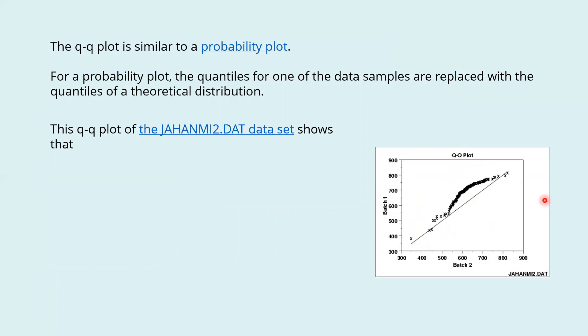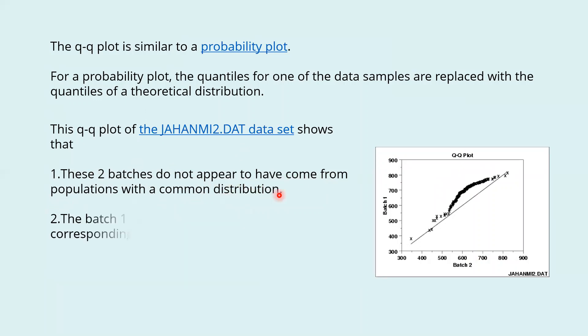This is a QQ plot which shows these two batches do not appear to have come from populations with a common distribution. The batch 1 values are significantly higher than the corresponding batch 2 values.